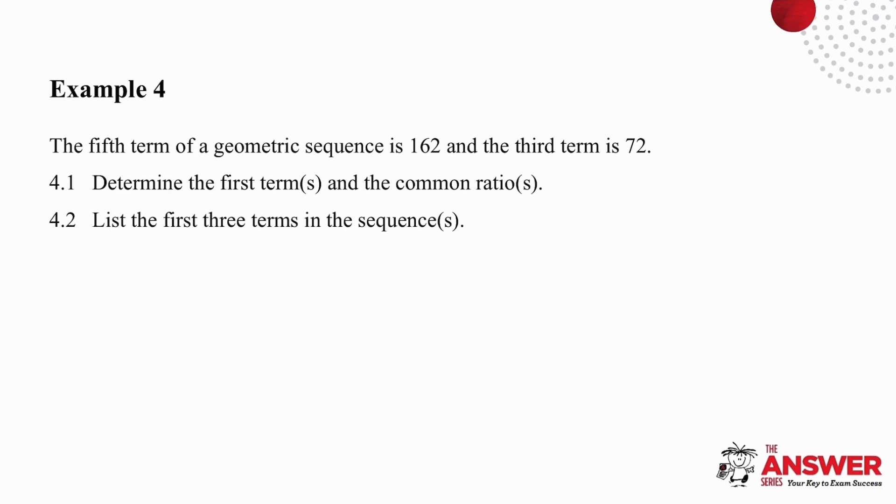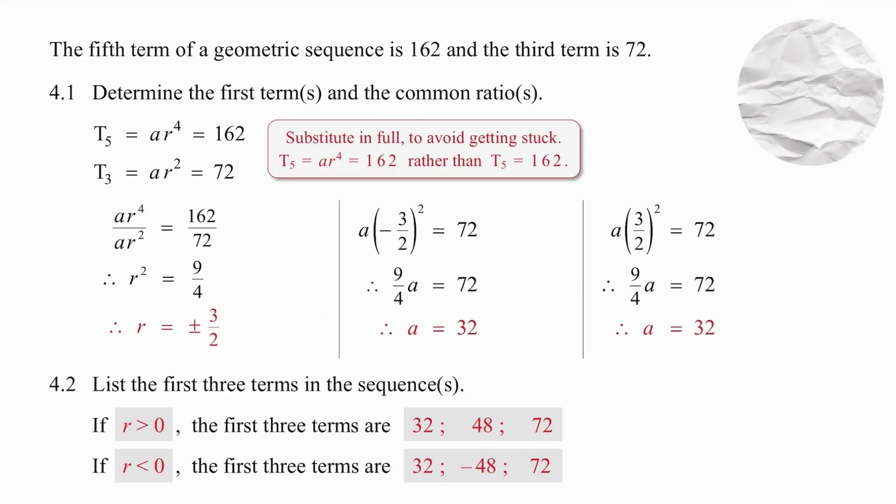Pause the video try question four on your own and then we'll work through it with you. In order to determine the first term and the common ratio, possibly two answers for both, we need to make use of the information given so we've got the fifth term of a geometric sequence equal to 162 and the third term equal to 72.